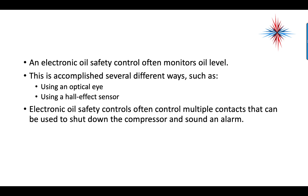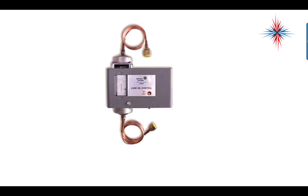An electronic safety control often measures oil level, accomplished several ways such as using an optical eye or a Hall effect sensor. Electronic oil control safety controls often control multiple contacts that can be used to shut down the compressor and sound an alarm. Here is an example of a mechanical oil pressure control: one side goes to the pump, the other goes to the low side of the system on the suction line. The adjustment dial is used to set what the net oil pressure should be, and there's also a manual reset button in the center.